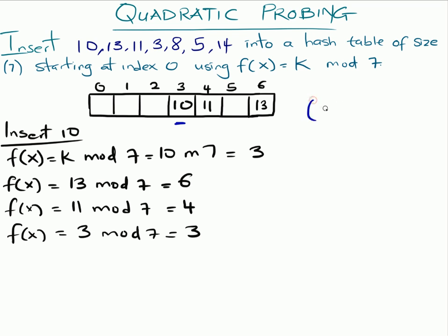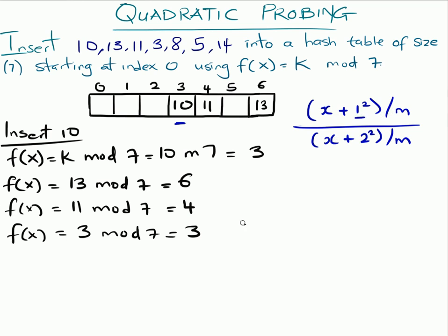We're going to use the quadratic probing formula: h(x) + n² mod table_size, where n goes from 1 for as long as you need it — usually up to about 4. So we're going to resolve this collision using the first formula: x + 1², which is 3 + 1² = 4.